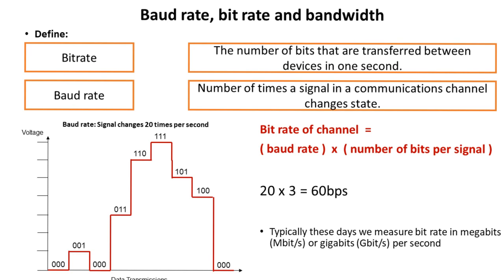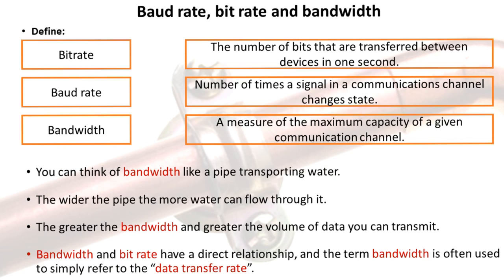Typically these days, we measure bit rates in megabits or even gigabits per second. The last term to get your head around in this basic section is bandwidth, which is a measure of the maximum capacity of a given communication channel. You can think of bandwidth as analogous to a pipe transporting water — the wider the pipe, the more water can potentially flow through it. The greater the bandwidth, the greater the volume of data you can transmit. Typically, bandwidth and bit rate have a direct relationship, and the term bandwidth is now more commonly used to refer to the overall data transfer rate.